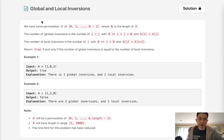Welcome to April's legal challenge. Today's problem is global and local inversions. We have some permutation A of 0, 1 through n minus 1 where n is the length of A. So basically we have a permutation of numbers between 0 to n minus 1.